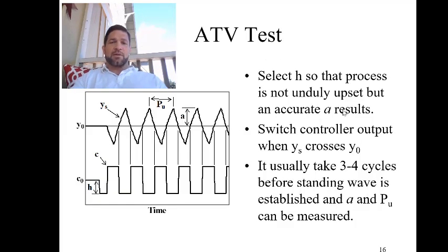So for an ATV test, it's an open loop method so the controller will be turned off and we apply a change in the controller output or we can do a change in the valve position. But generally we step it up and down around the value where it's set and we establish a standing oscillation, and then we use the attributes from the standing oscillation to calculate the PI and possibly D terms for the controller.